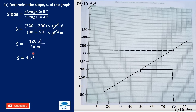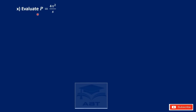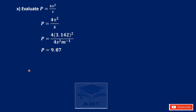Evaluate g = 4π² ÷ slope. With π = 3.142 and slope = 4 s²/m: the 4s cancel, leaving π² = 9.87. The units give meters per second squared. Therefore the acceleration due to gravity on Earth is g = 9.87 m/s².